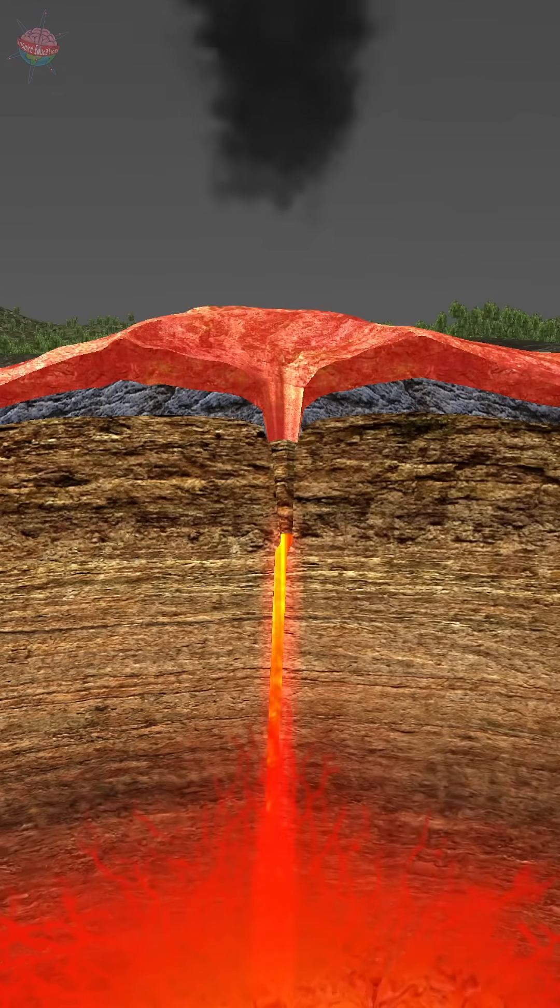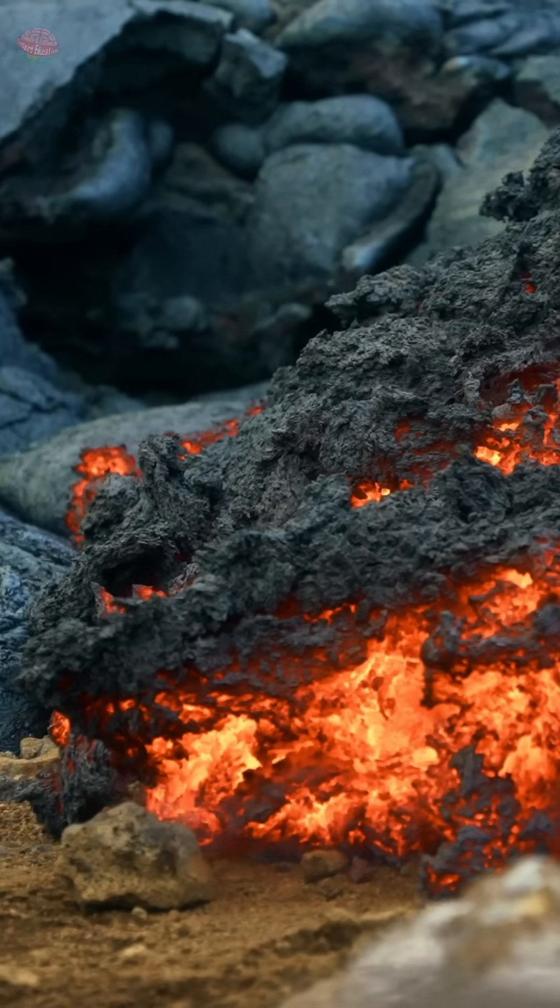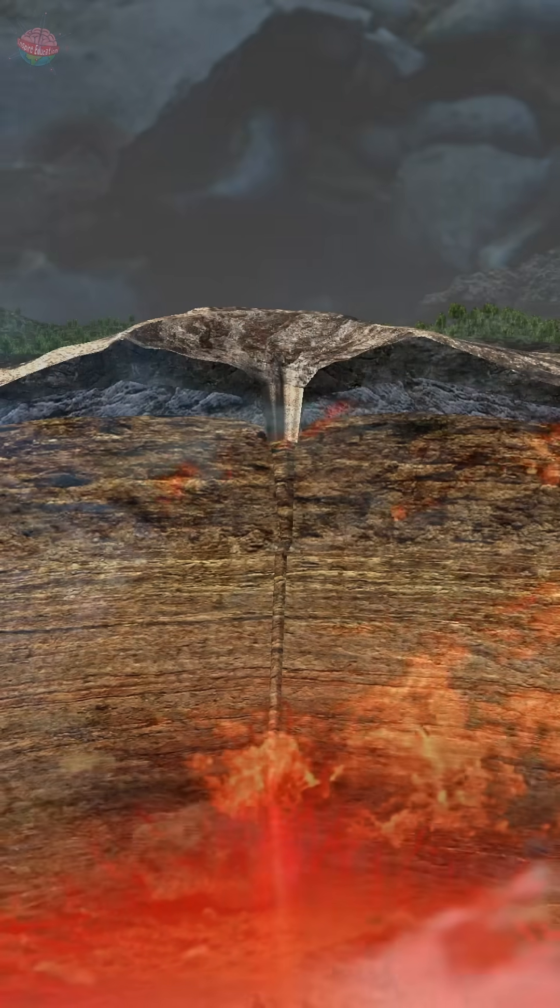When it's above the surface of the Earth, the magma is called lava. When the lava cools down, it hardens to create an extra layer on the Earth's crust.